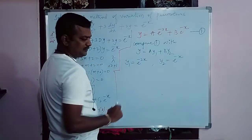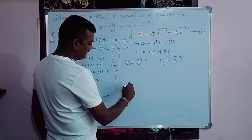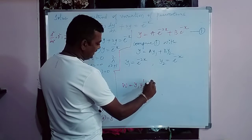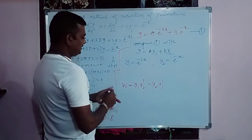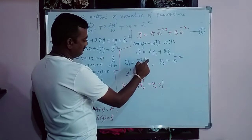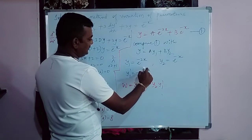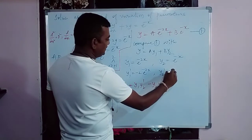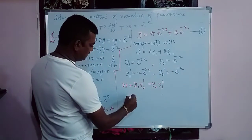Next we need to find the Wronskian W = y1·y2' - y2·y1'. For that, we differentiate: y1' = -2e^(-2x) and y2' = -e^(-x). Now substitute these into the Wronskian formula.